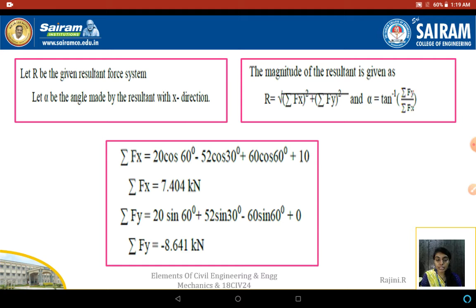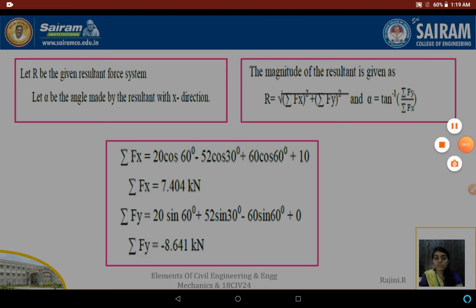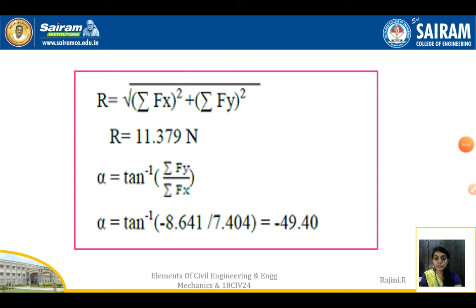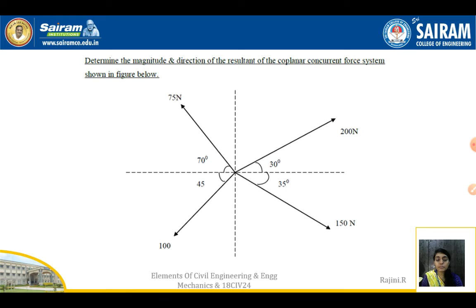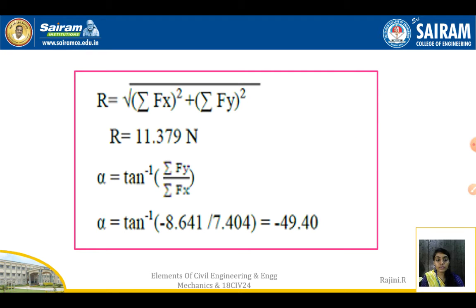Now solving for the resultant force: R = √(ΣFx² + ΣFy²). Substituting both values gives R = 11.379 kN. Then alpha = tan⁻¹(ΣFy / ΣFx) = tan⁻¹(−8.641 / 7.404), giving alpha = −49.40°.